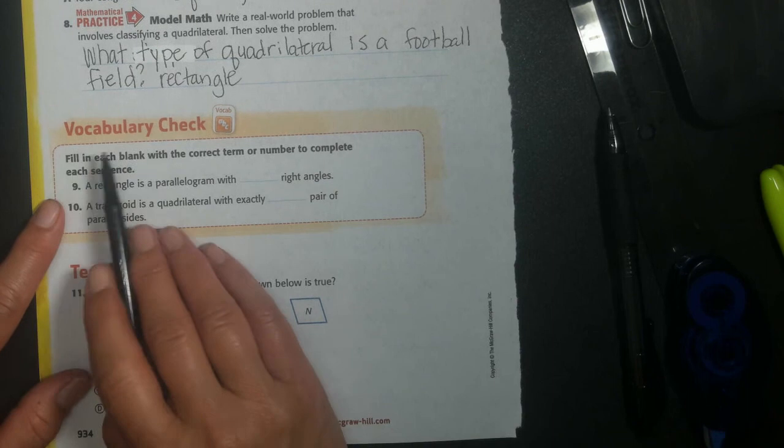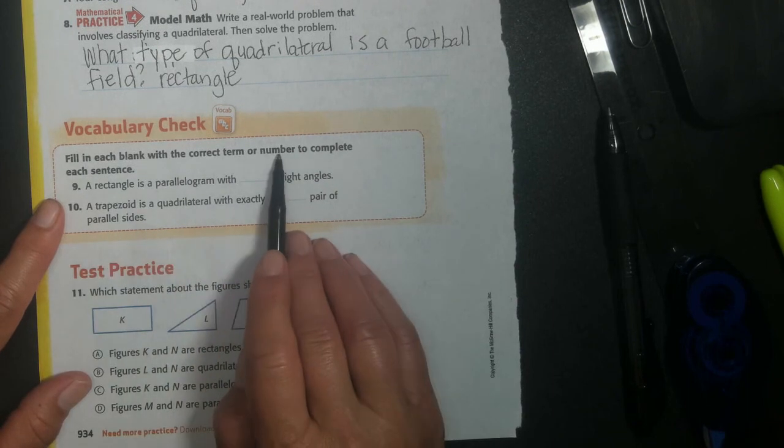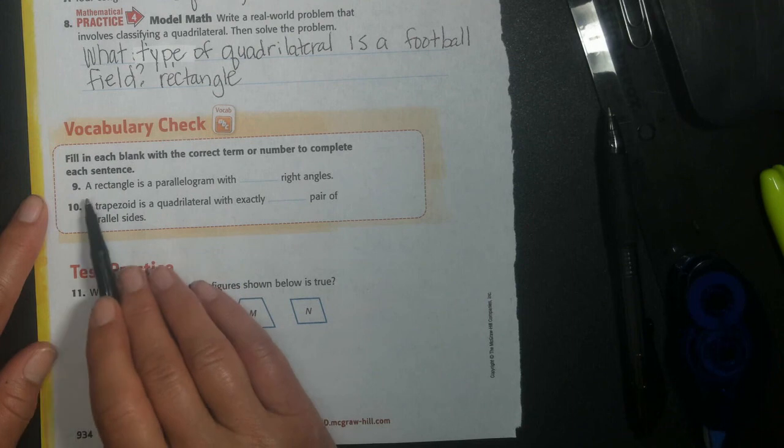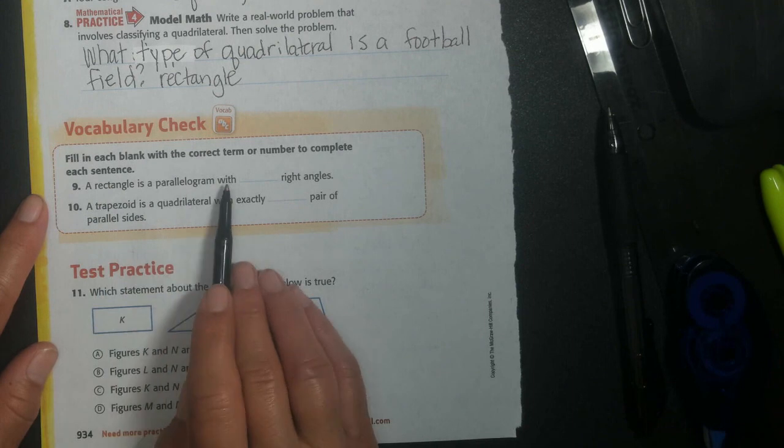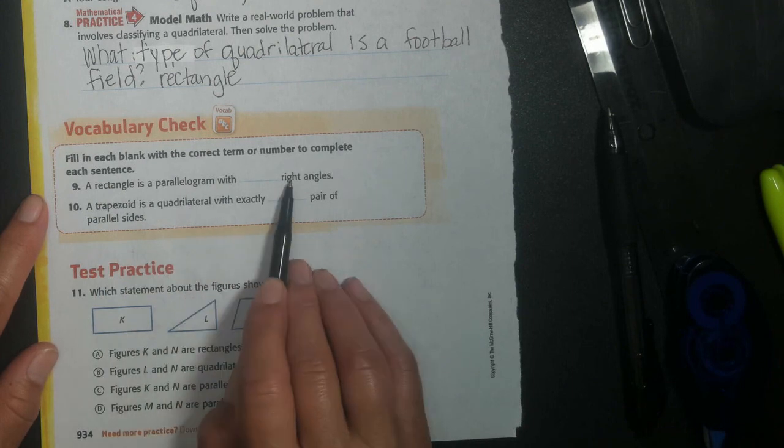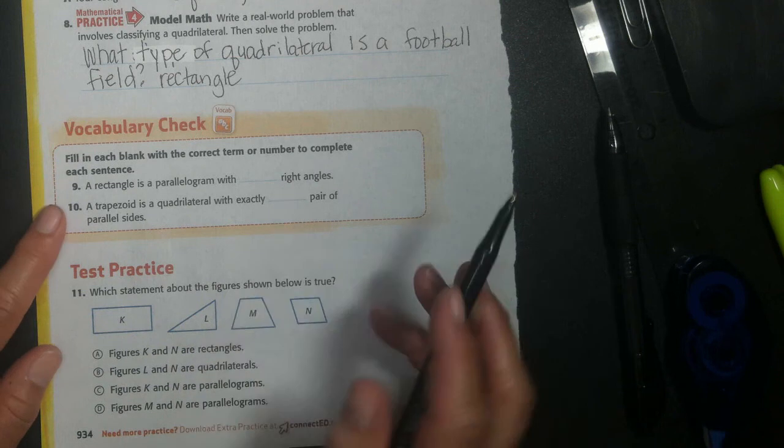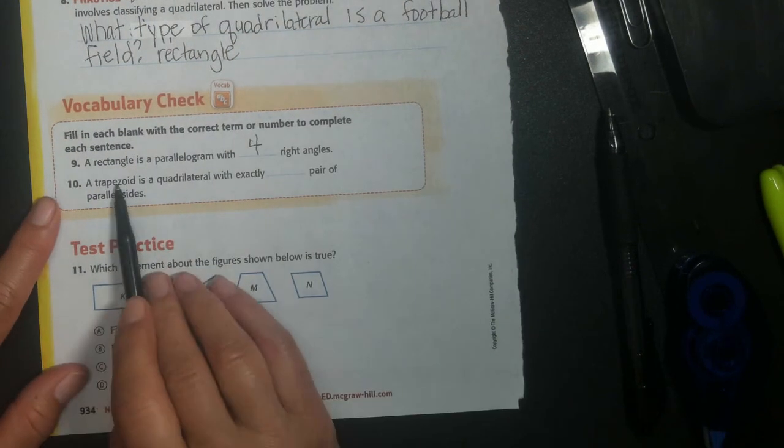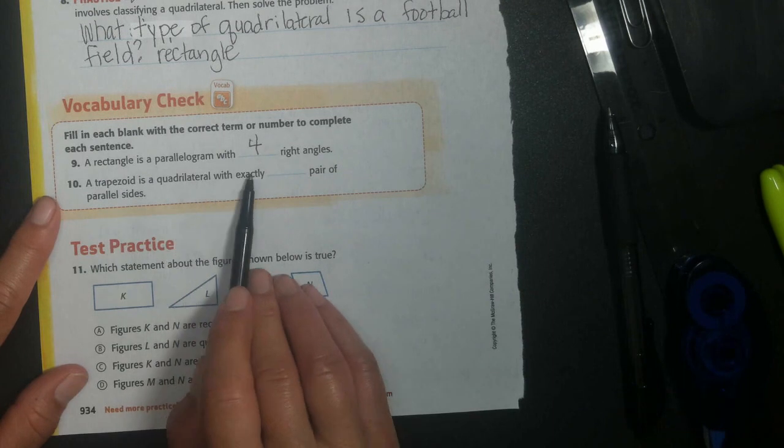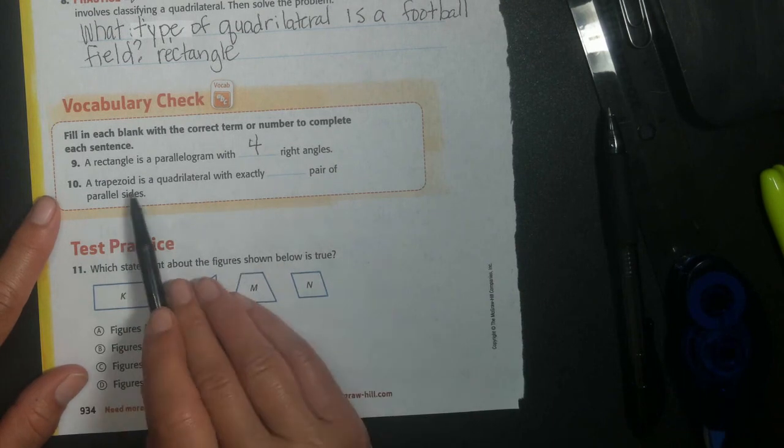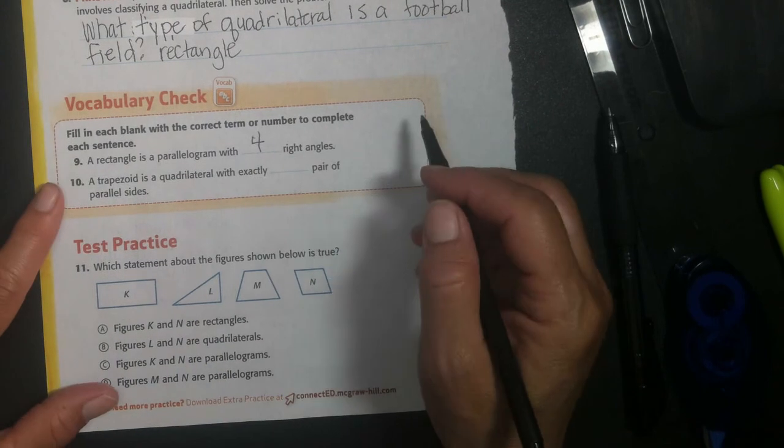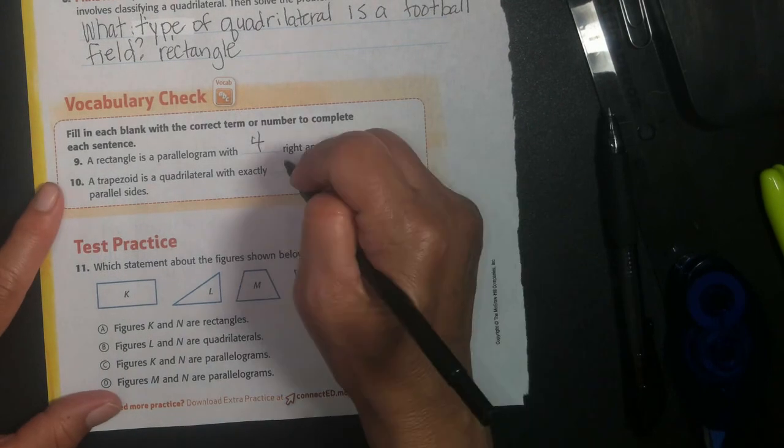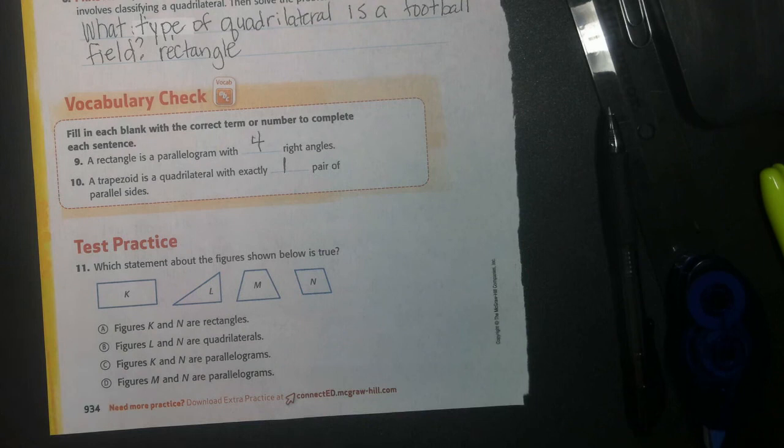Fill in each blank with the correct term or number to complete each sentence. A rectangle is a parallelogram with blank right angles. How many right angles does it have? You're right, four. A trapezoid is a quadrilateral with exactly blank pair of parallel sides. Only one on a trapezoid are parallel. Otherwise, it'd probably be a parallelogram, or it could be a rectangle, a square.